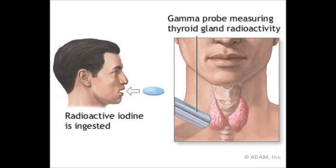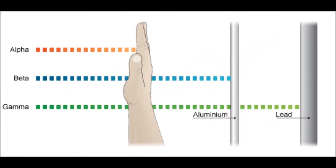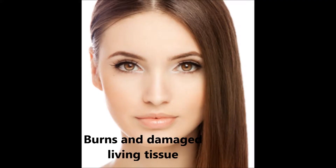So what is beta and gamma radiation? Beta particles are fast-moving electrons which are able to penetrate further into objects and are easily absorbed, and are able to be stopped by a sheet of aluminium. Beta radiation is able to leave your skin with burns and damage living tissue.